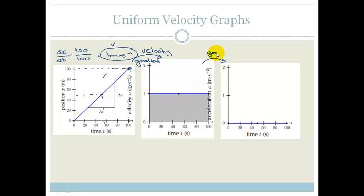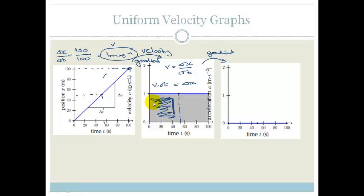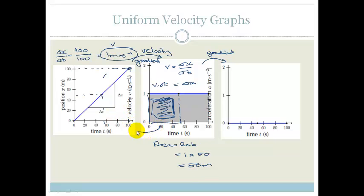The gradient of the velocity versus time graph gives us our acceleration. Now let's go backwards. We know that velocity is change in displacement over change in time, therefore change in displacement is velocity times change in time. So if we look at 50 seconds, the area under the velocity-time graph — which is velocity times time — is 1 times 50, giving us 50 meters. So the area under the velocity versus time graph gives us our displacement.